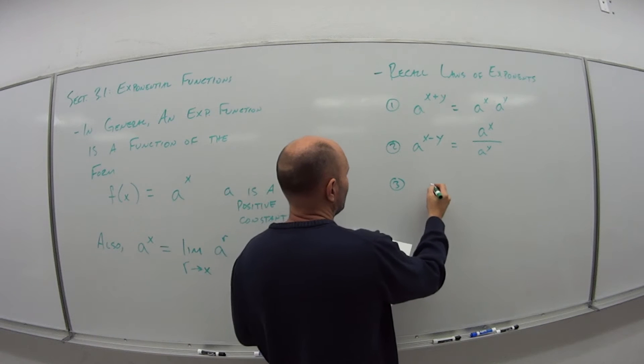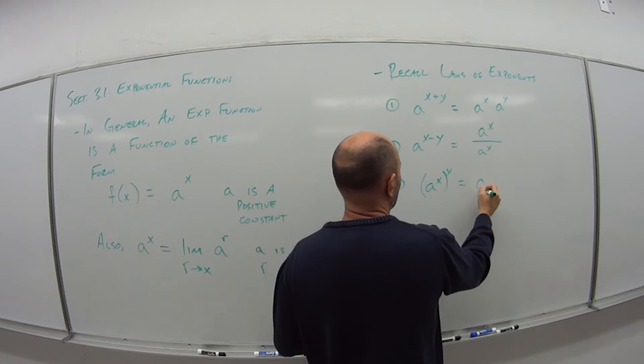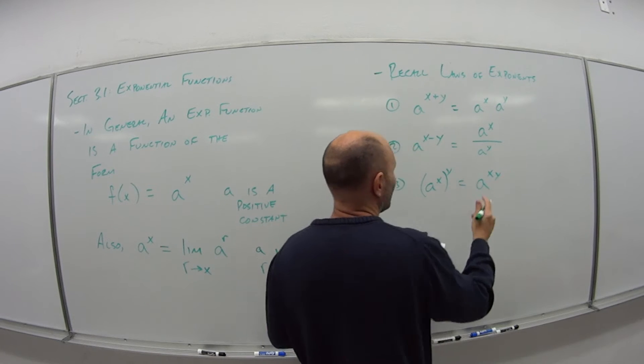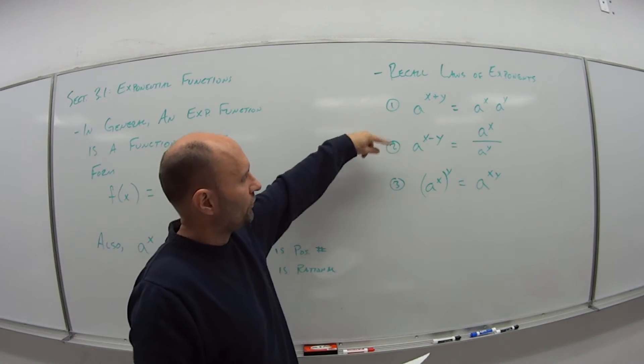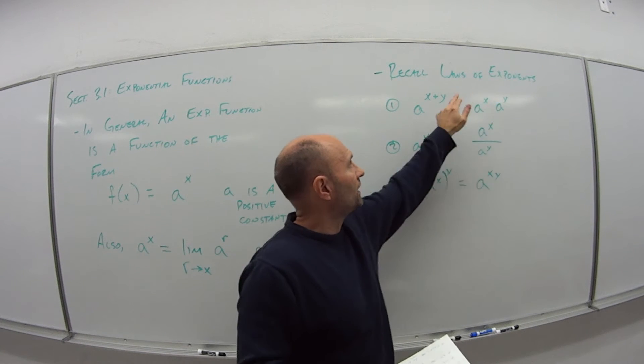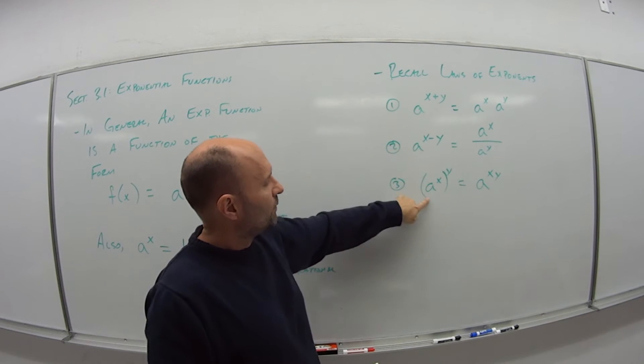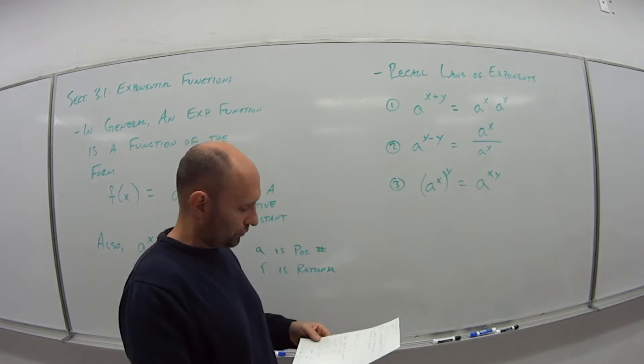Third law I have is that a to the x all raised to the y power is the same as a to the x times y. So it's a little different from one, so be careful with that. If I have two values with the same base multiplied by each other, I can just add their exponents. But if I just have one base with two different exponents, I would multiply them.